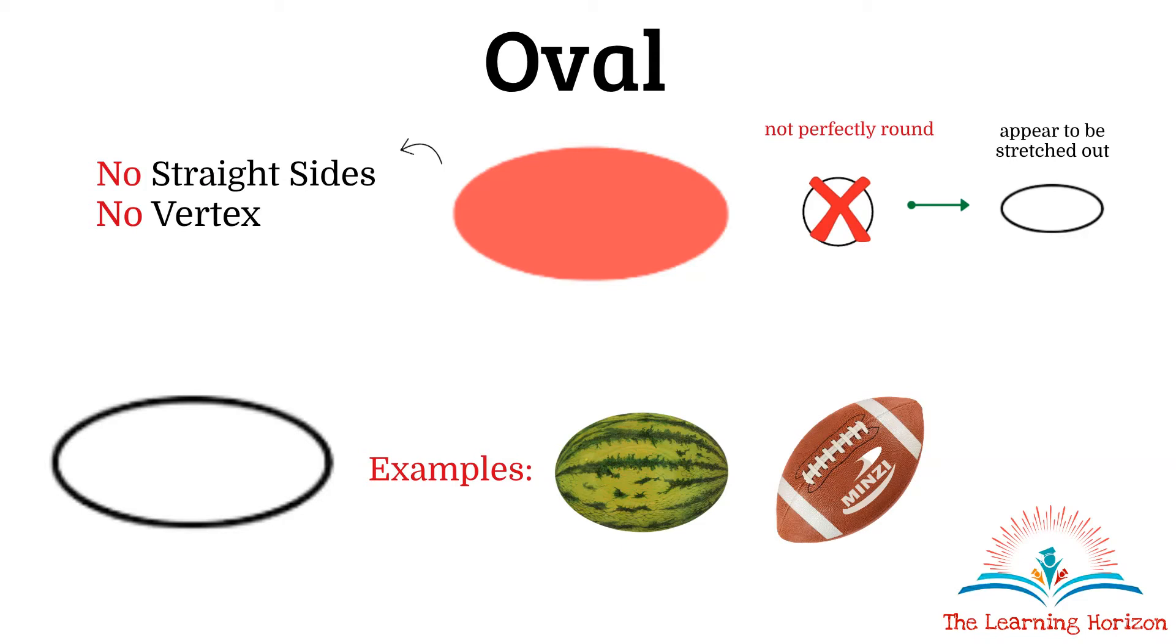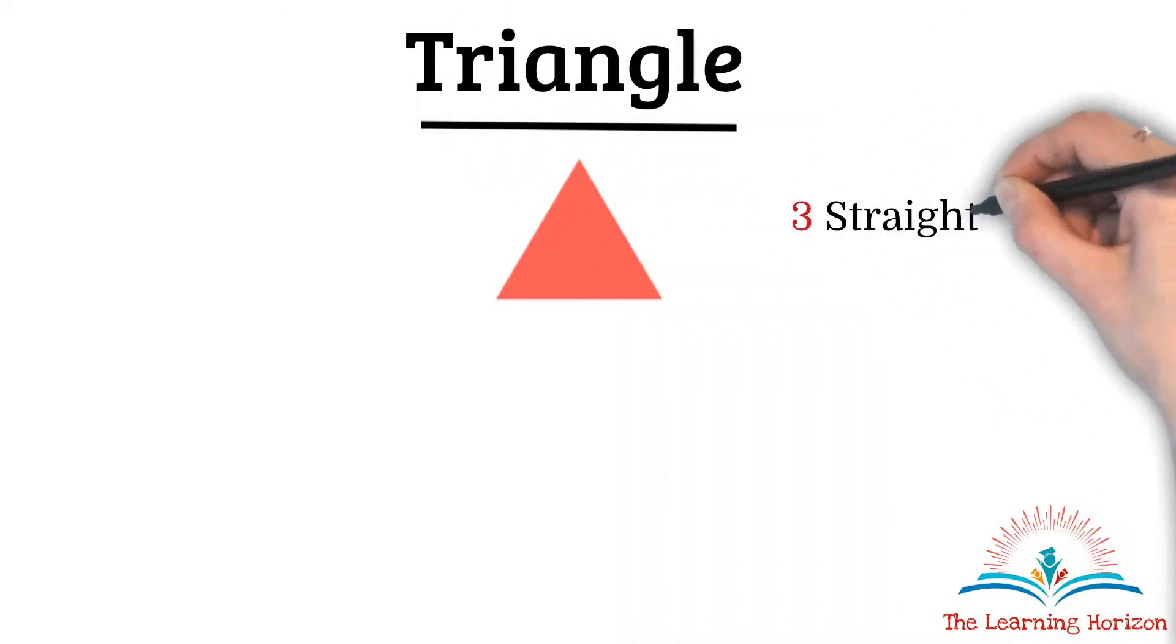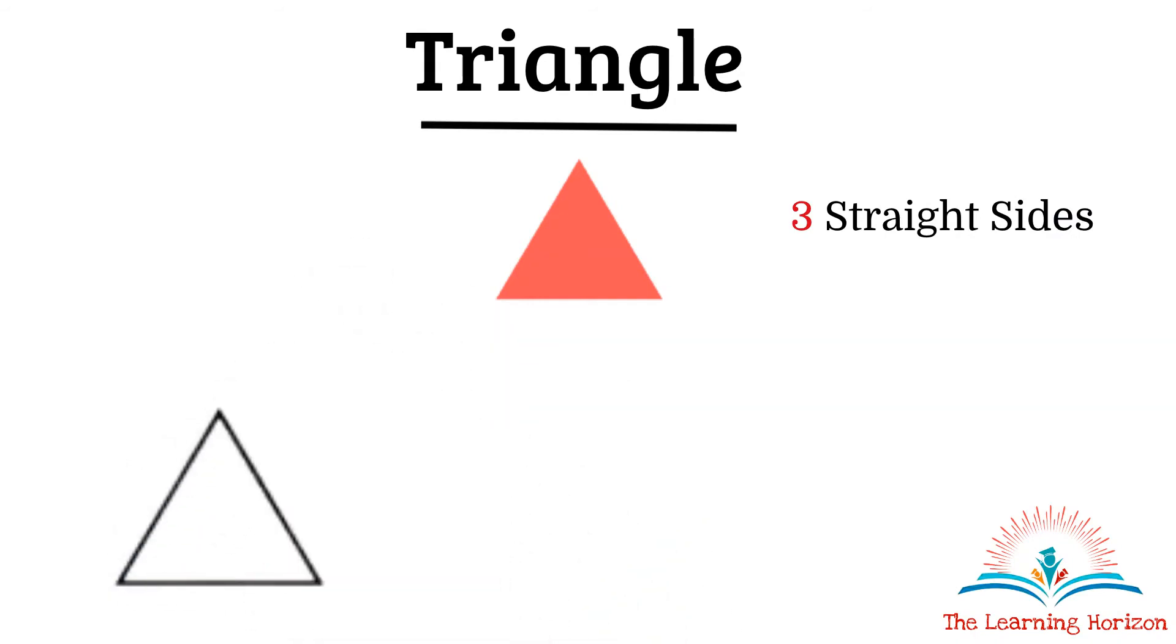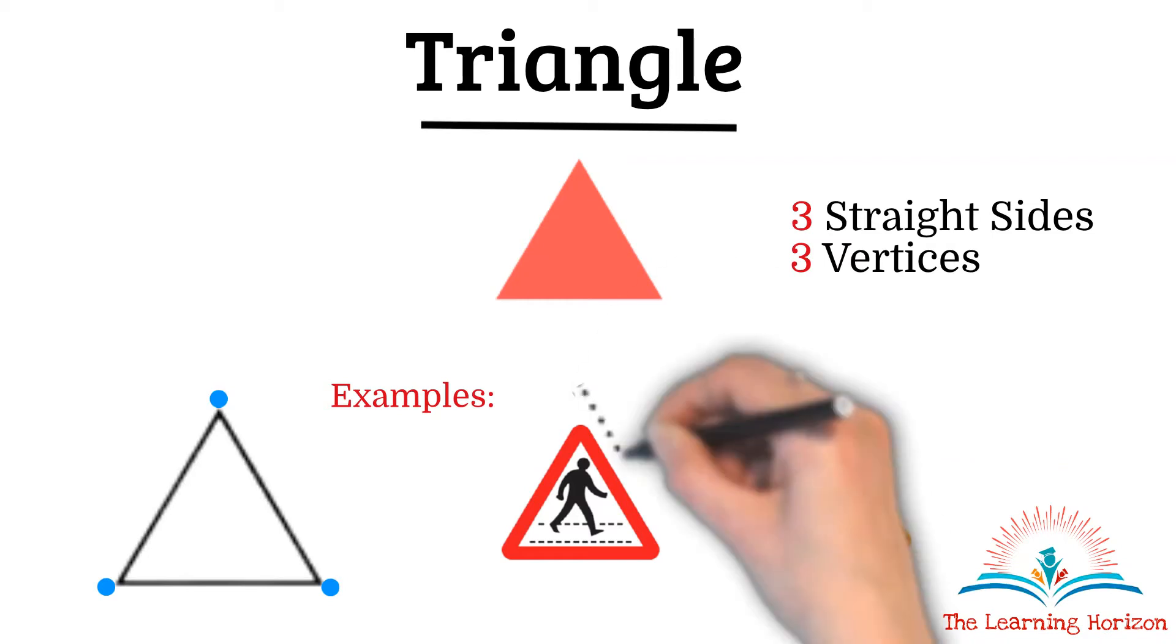Now let us look at some shapes with straight sides. Triangle. As the name suggests, triangle is a shape with three straight sides, that is one, two, and three. And they have three vertices, one, two, three. Some real world examples for a triangle are this traffic sign and nacho chips. Both of these are perfect examples for a triangle.